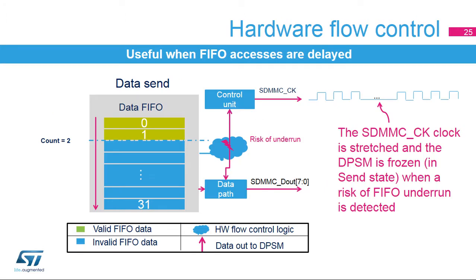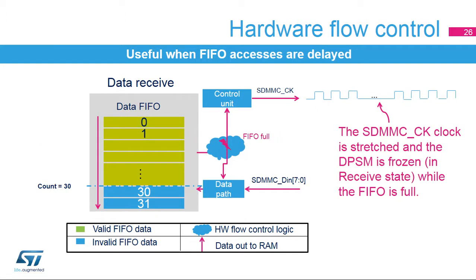The hardware flow control function is used to avoid FIFO underrun when the DPSM is in send mode and overrun errors when the DPSM is in receive mode. The hardware flow control logic stops the SDMMC-CK pin signals and freezes the DPSM when a risk of underrun or overrun is detected. Hardware flow control must not be used with a variable delay, for example SDR-104. In send state, the SDMMC-CK clock signal is stretched and the DPSM is frozen to prevent any FIFO underruns. The clock and DPSM are restarted when the FIFO is half full or all the last transfer data is available in the FIFO. In receive state, the SDMMC-CK clock is stretched and the DPSM is frozen while the FIFO is full (risk of overrun). The clock and DPSM are restarted when the FIFO becomes half empty.